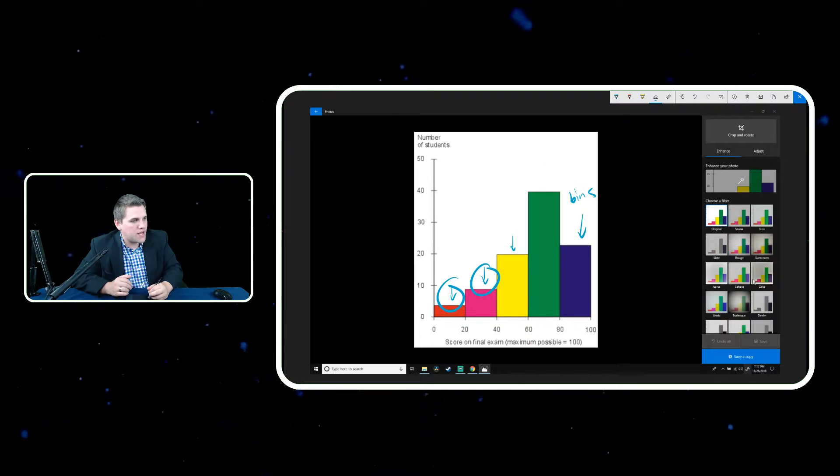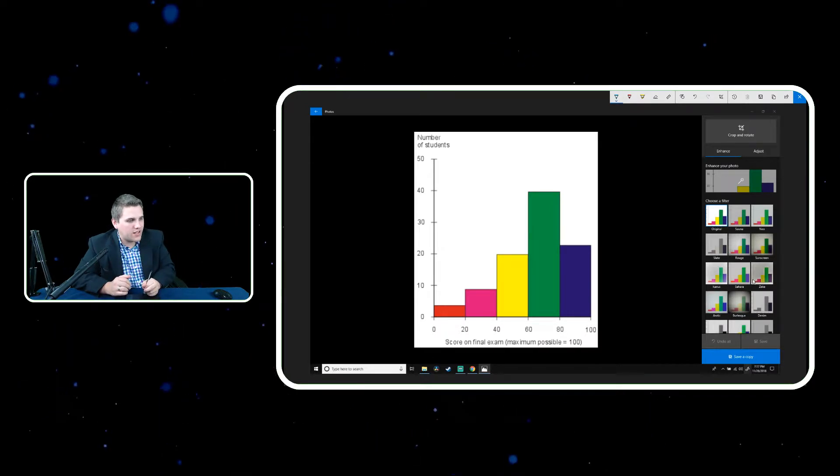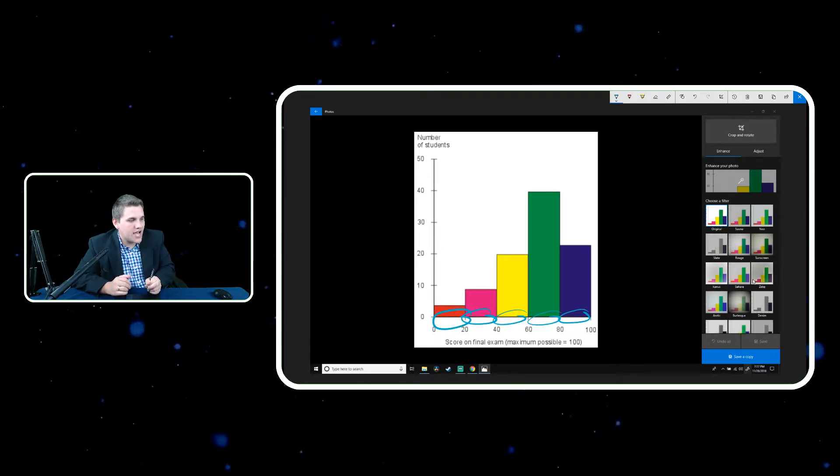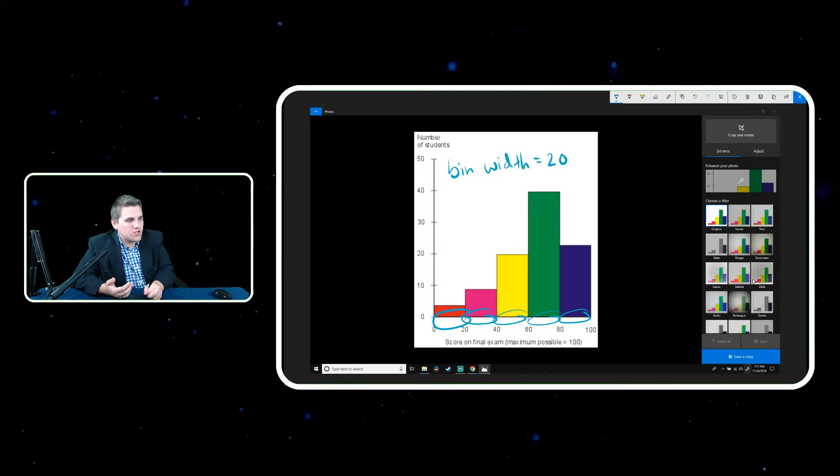So these are called bins. And we notice that each bin is actually exactly the same in size. Each bin is size 20 in this case. So we would call that the bin width is 20.